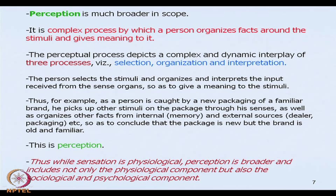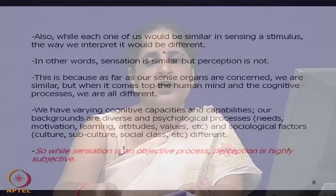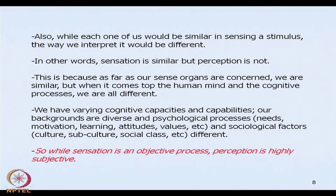Our sense organs are similar — as human beings, we all have eyes, ears, nose, tongue, and skin. So we will also be very similar in sensing a stimulus, but the way we process it, organize facts, and interpret the stimulus will be very different. While sensation is something similar across all people, perception is something unique. This is because while our sense organs are the same, our psychological, sociological, and cognitive setups differ. We have different cognitive capacities, different backgrounds, different sociological influences, and different psychological processes — motivation, needs, personality, learning, attitudes, family, culture, subculture, social class.